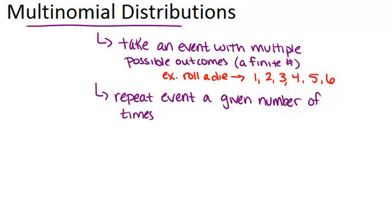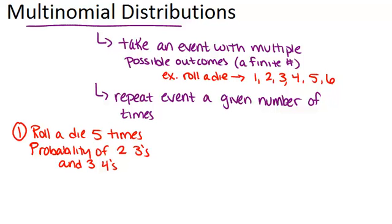So let's look at that example. We're rolling a die five times, and we're specifically looking for what's the probability that in those five times we'll get two threes and three fours.